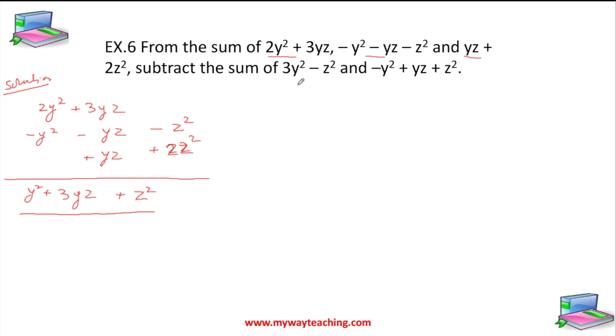Now we will subtract the sum of this and this. We write 3y² - z². We take -y² + yz + z². Again it is an addition, so there is no need to change the sign. So here it comes 2y² + yz.